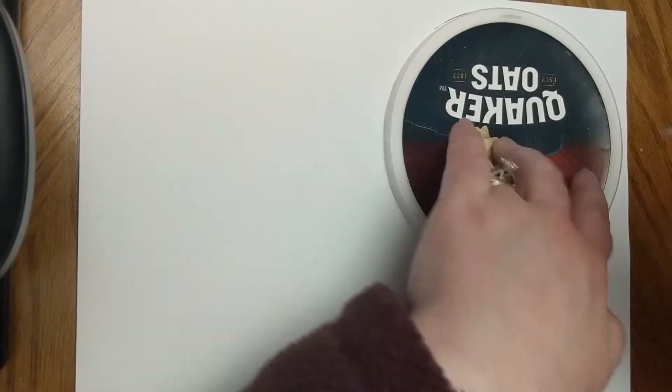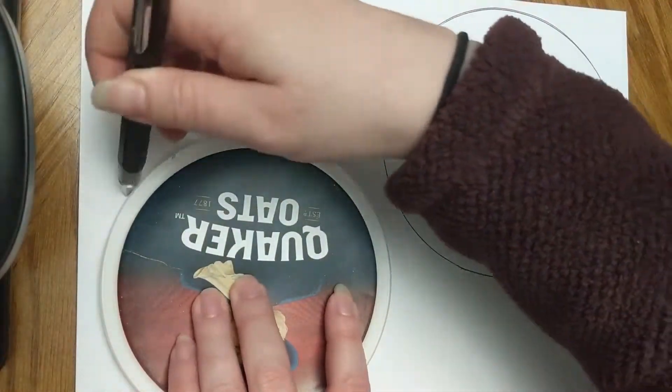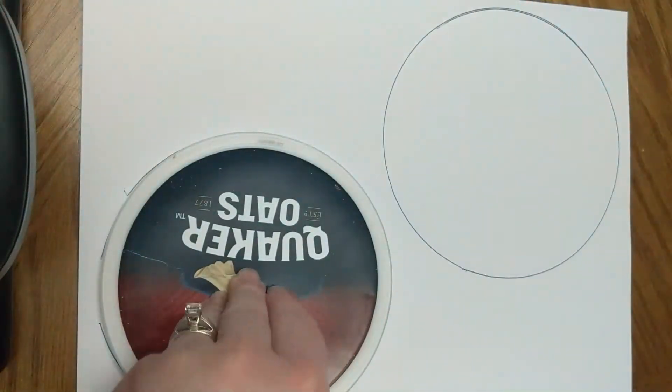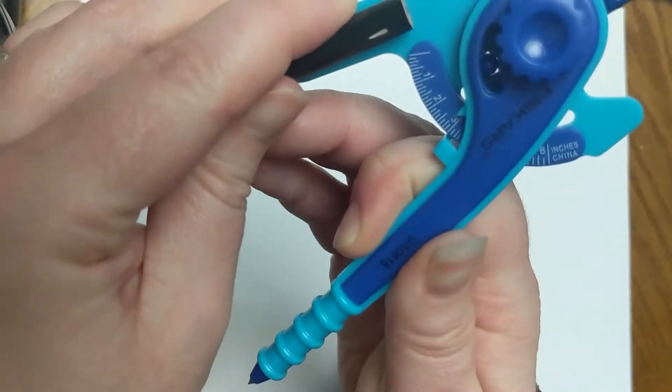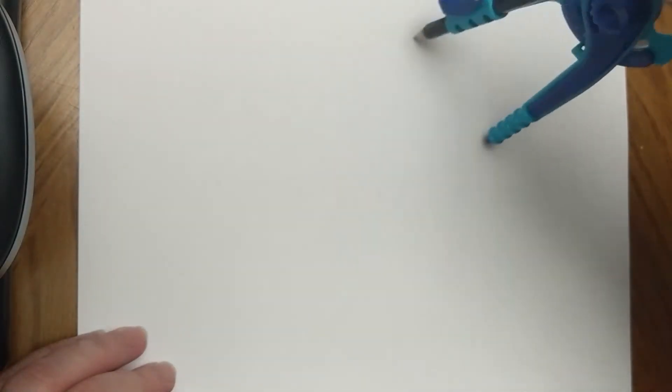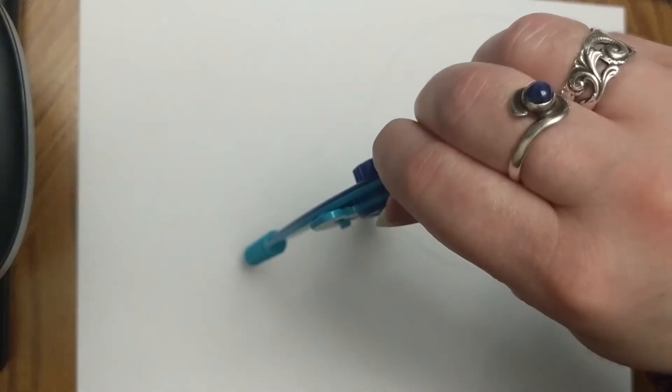You're going to start by either tracing something circular that you found in your house, like a lid or something else approximately 4 to 6 inches wide, or you can use a compass. If you don't know how to use it, you just stick the pointy end in the center and it traces the circle for you.